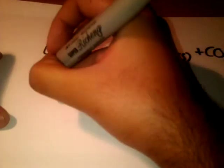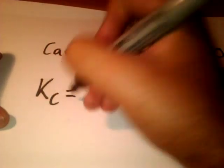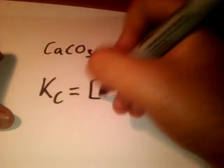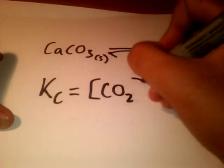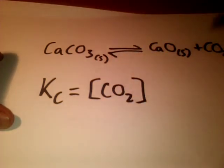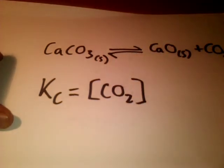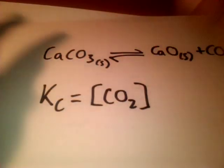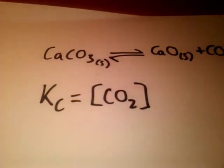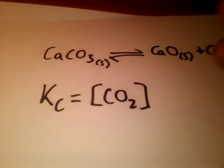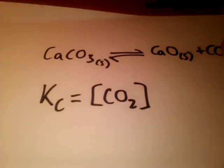The Kc expression in this case would just be Kc = [CO2]. No indices because this is carbon dioxide on its own—you don't include the solids in the expression. All that's left is just the carbon dioxide in the equilibrium constant expression. I hope that's helped some of you. Make sure you comment and subscribe. Thanks for watching.